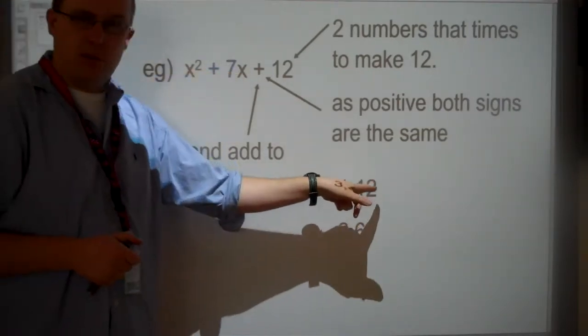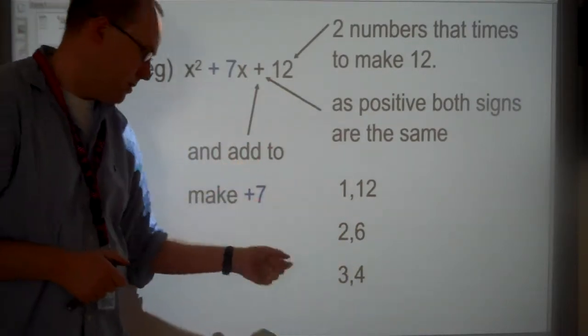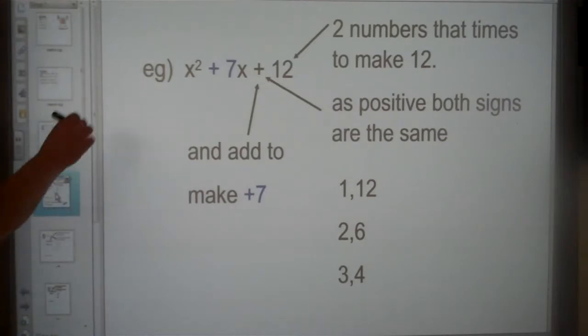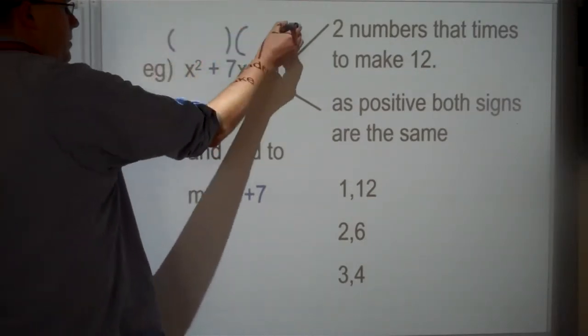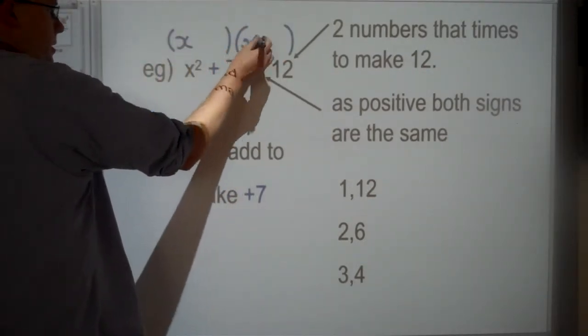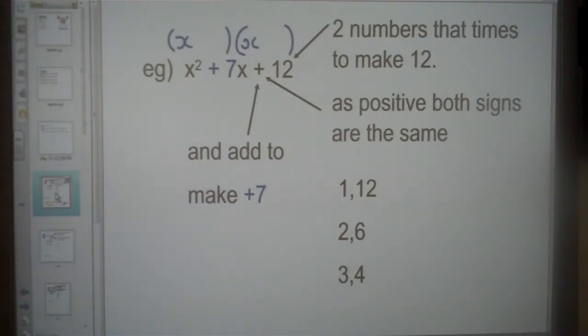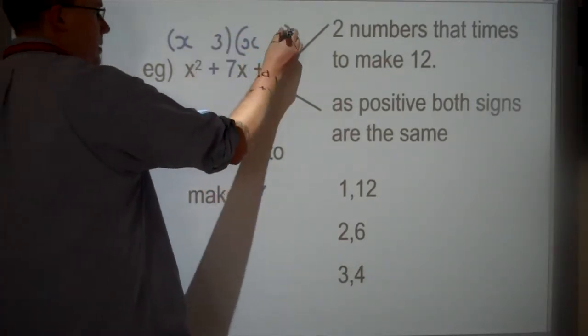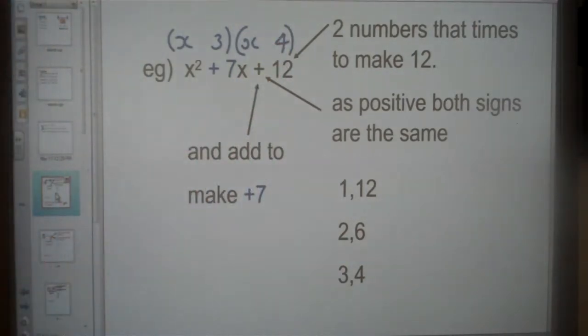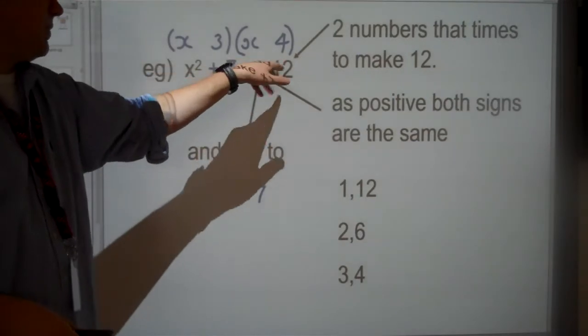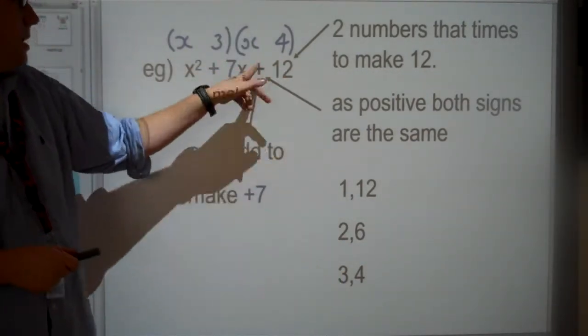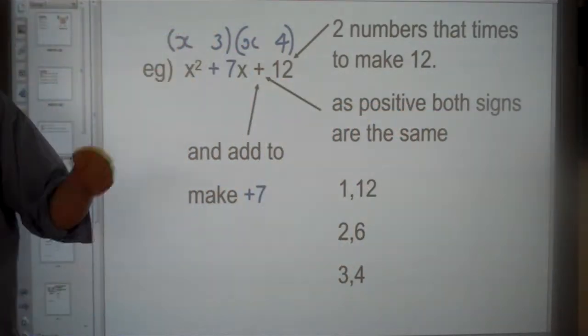1 plus 12 is 13, no good. 2 plus 6 is 8, no good. 3 plus 4, perfect. As we've started to fill in the answer, we can immediately put x and x. As it starts with x², I know I'm going to be doing x times x. As we've just found it's 3 and 4, I can fill in 3 and 4 as well. With this being positive 12, this plus sign tells you you're going to add your two factors together, and both signs are going to be the same in my answer.